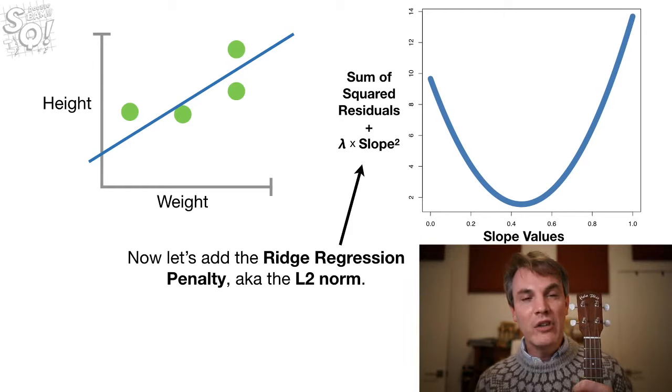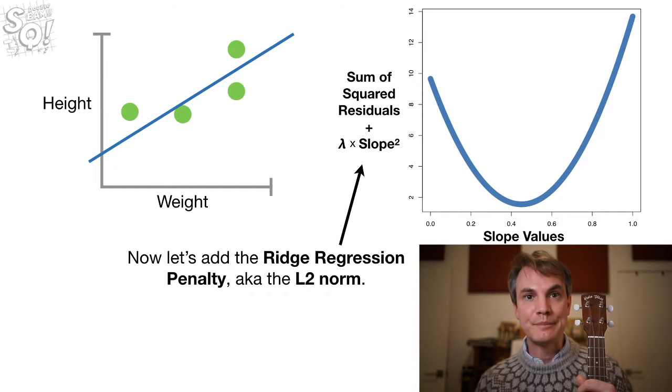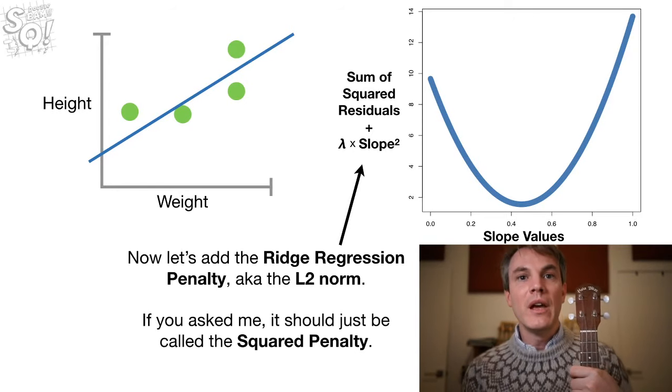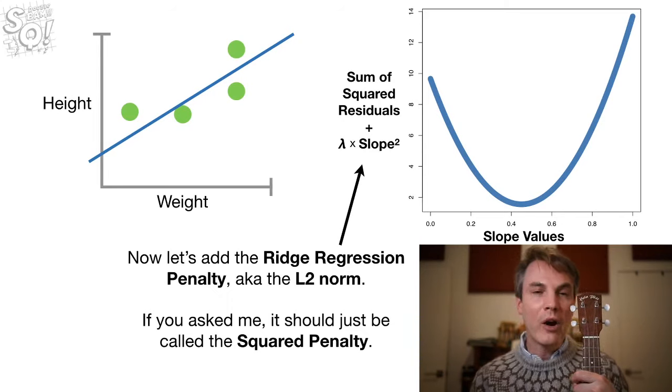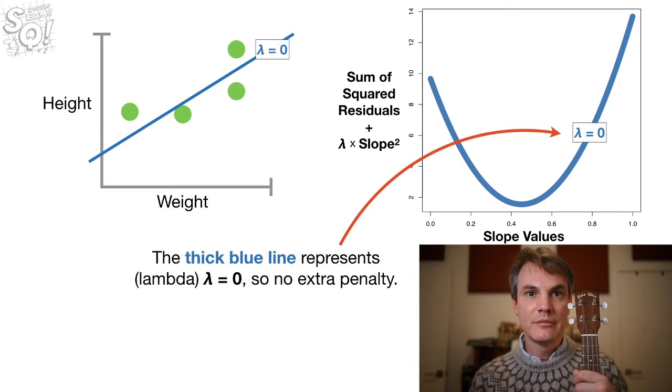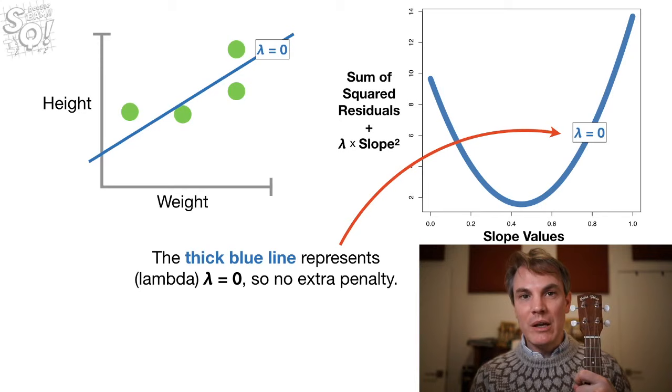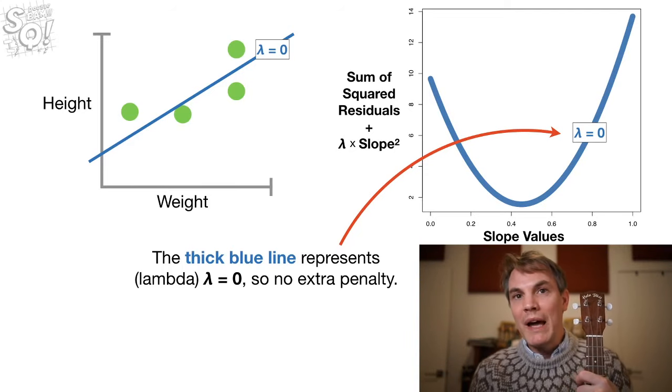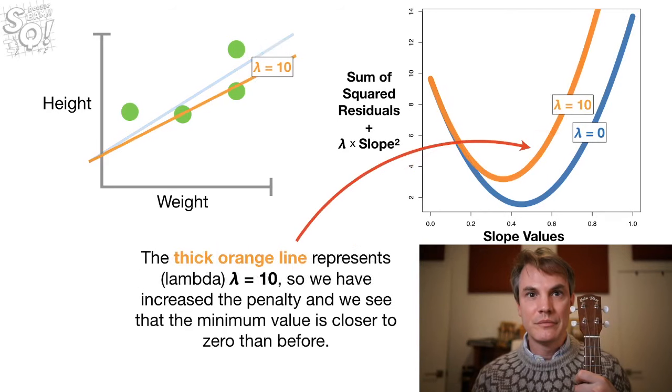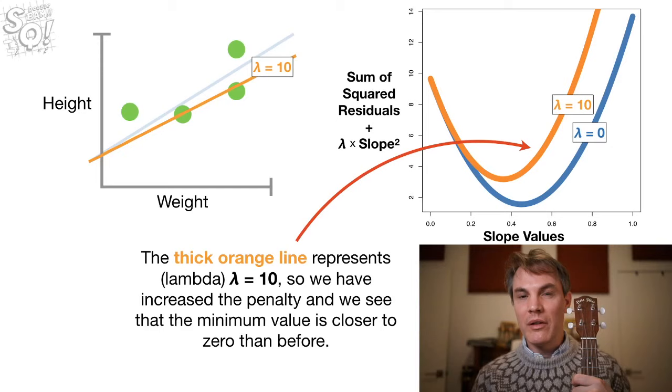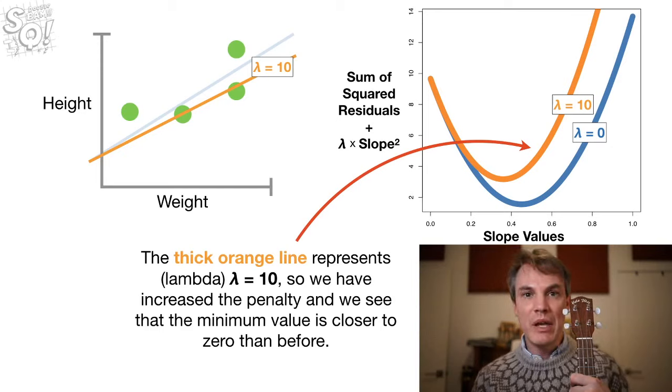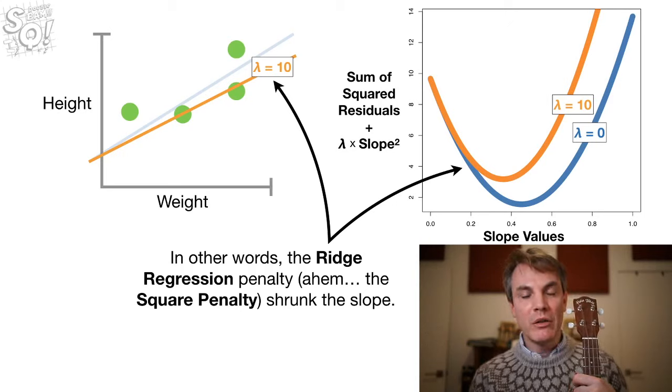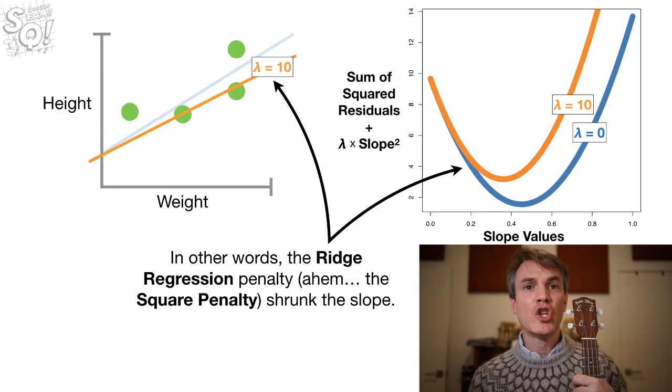Okay. Now let's add the ridge regression penalty, a.k.a. the L2 norm. And if you asked me, it should be called the square penalty, because that's what we're doing. We're squaring the slope. The thick blue line represents lambda equals zero, so that means there's no extra penalty, because we multiply the square of the slope by lambda. So, when lambda is zero, we're back to just having the sum of the squared residuals. This thick orange line represents lambda equals ten, so we have increased the penalty, and we see that the minimum value is closer to zero than before. In other words, the ridge regression penalty, the square penalty, shrunk the slope.